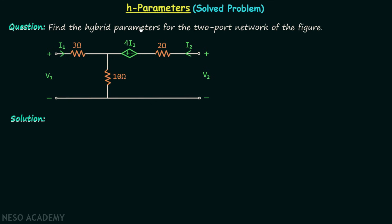Find the hybrid parameters for the two-port network of the figure. This two-port network has one, two, and three resistors and one current-dependent voltage source. We are required to find the hybrid parameters, or H parameters, of this two-port network.